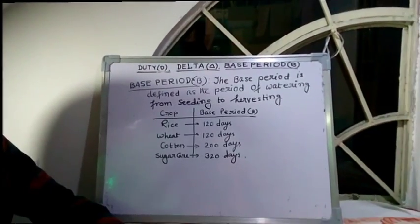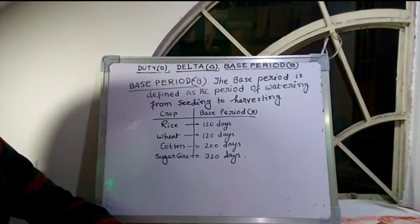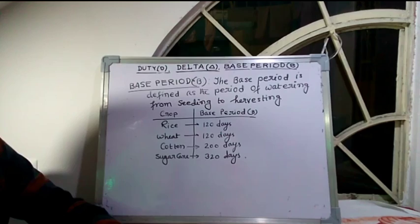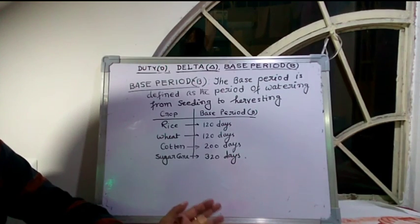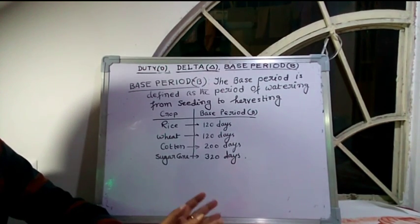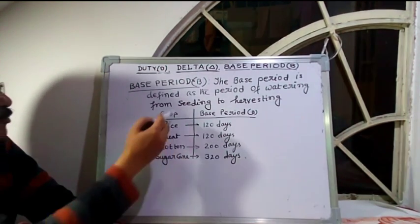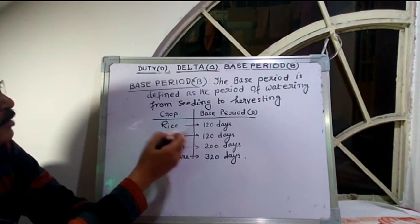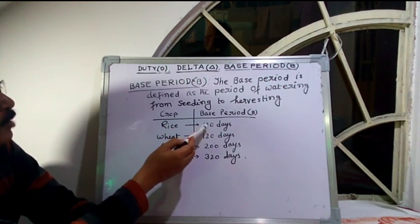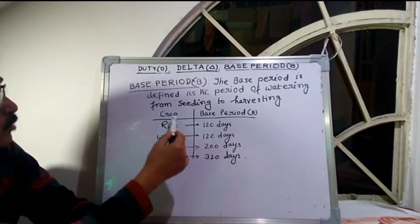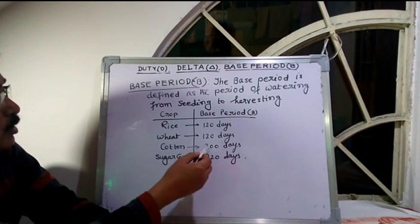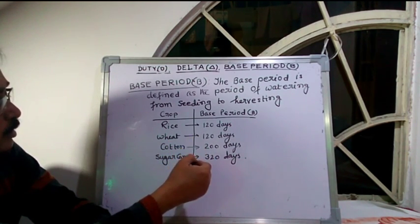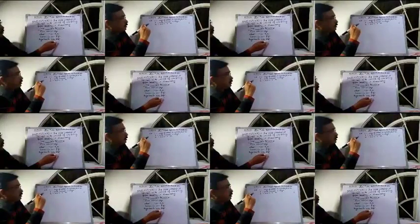The base period is defined as the period of watering from seeding to harvesting, and it is denoted by capital B. For crop rice, the base period is 120 days; for wheat, 120 days; for cotton, 200 days; and for sugarcane, 320 days.